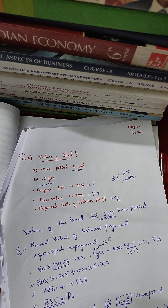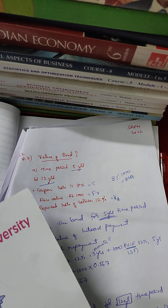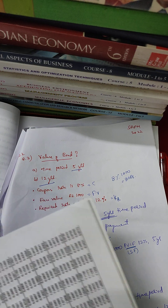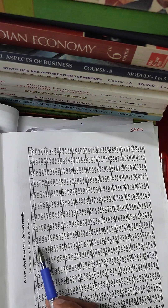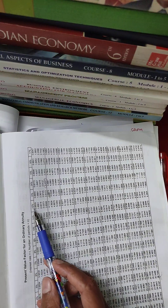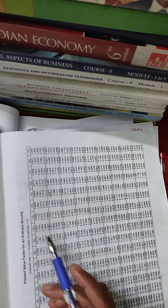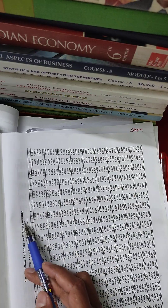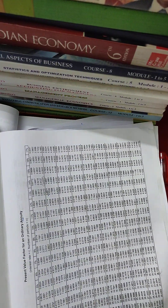We use the PVIFA annuity table for the coupon payment. For the face value of 1,000 rupees, we use the present value single factor table. The required rate is 12% for 5 years, giving an annuity table factor of 3.6048. This is important — the annuity table is for coupon payment.